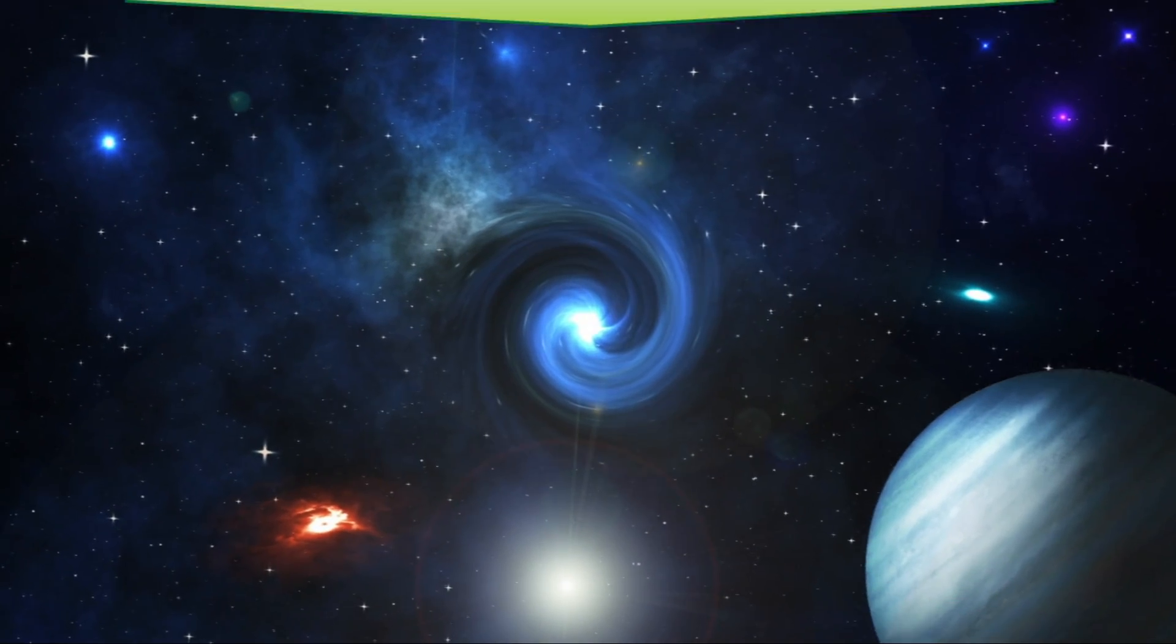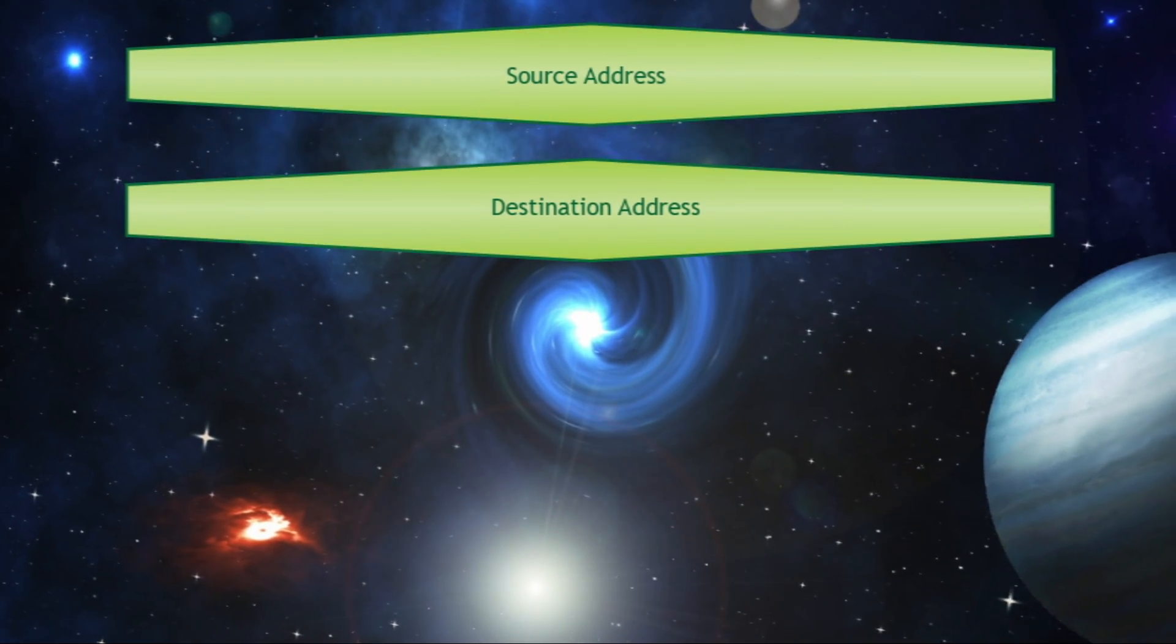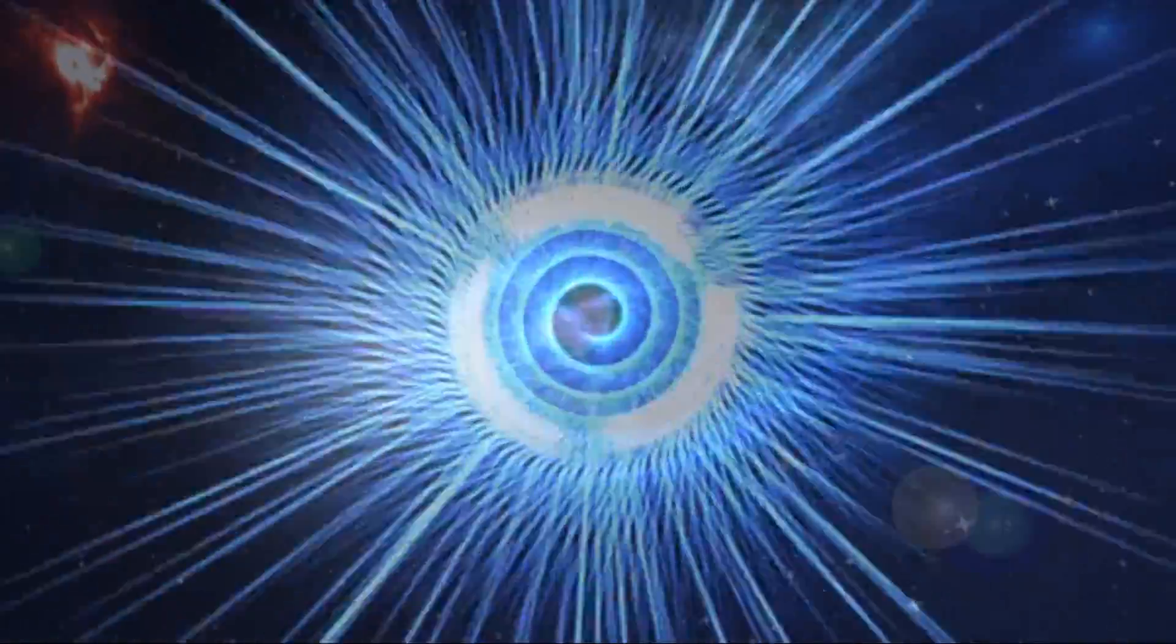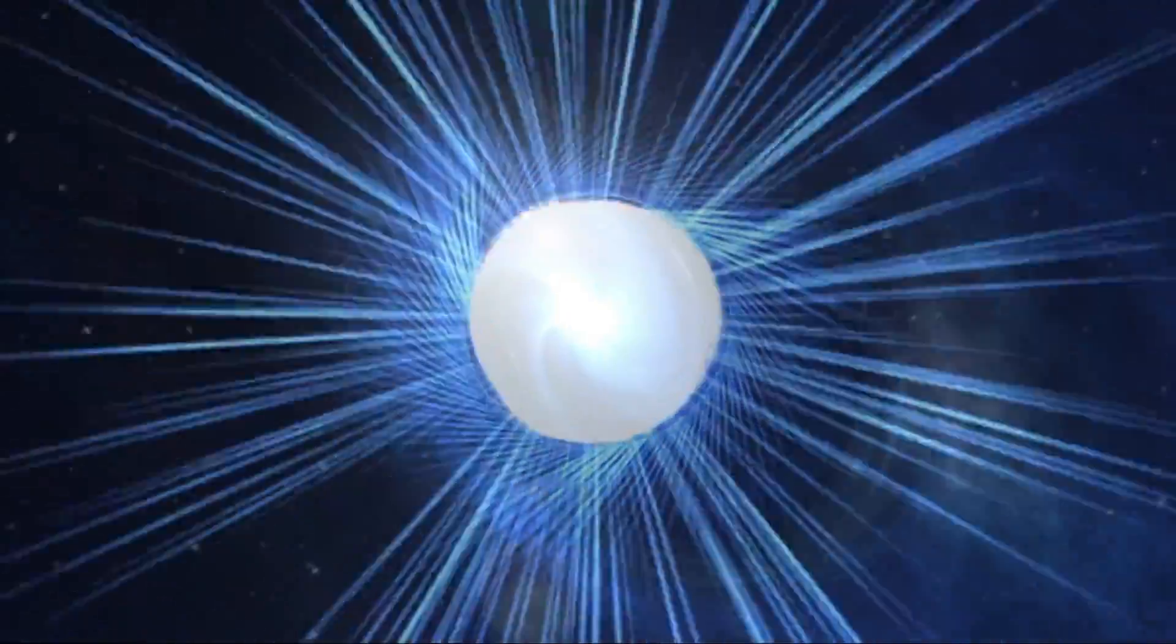Finally, there's the source and destination addresses. Each address is 16 bytes long, so these fields combined are 32 bytes. These fields represent the sender and the recipient. Pretty straightforward, no?